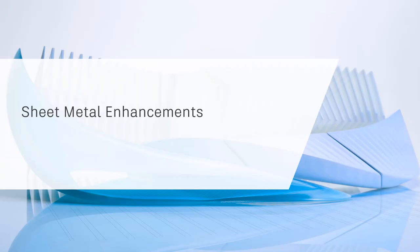In Inventor 2016, we extended the multi-body part environment to support sheet metal parts and introduced support for a zero bend radius for certain commands. With Inventor 2017, we continue to improve the sheet metal environment.